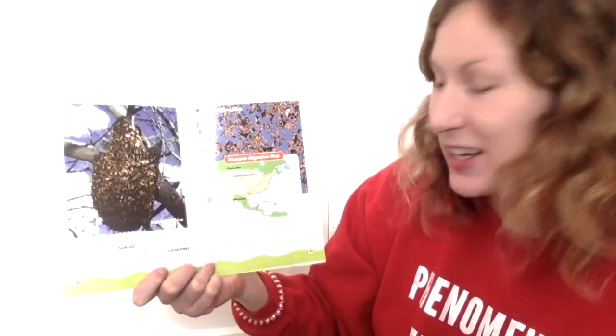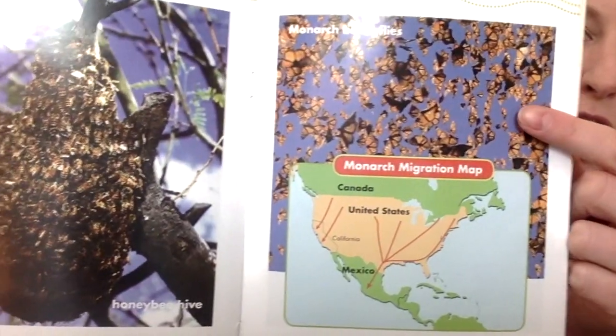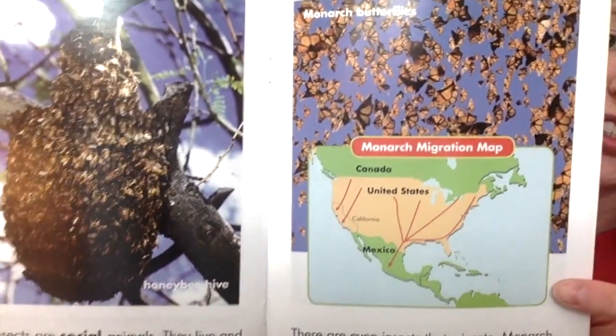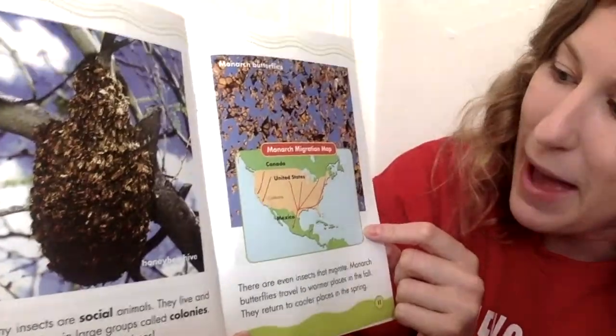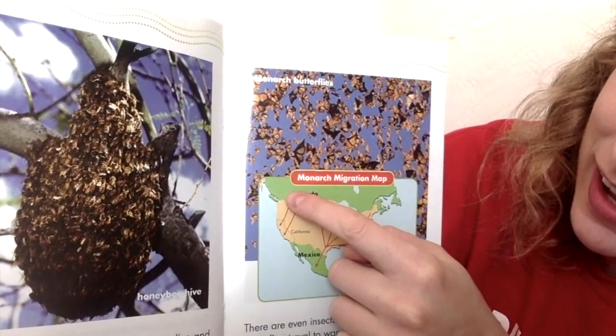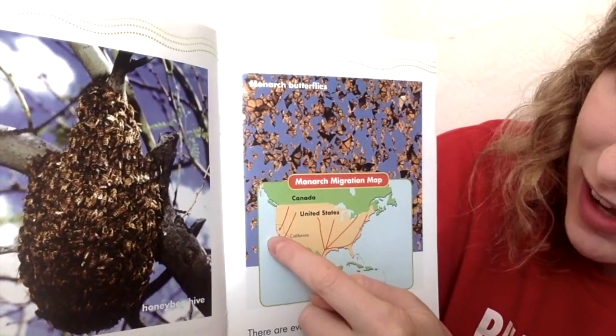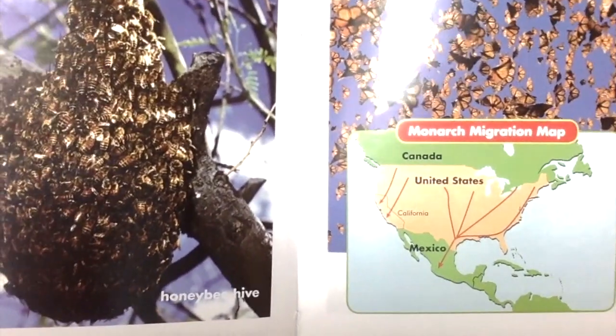There are even insects that migrate. Monarch butterflies travel to warmer places in the fall. They return to cooler places in the spring. Here's a beautiful picture of all of these monarch butterflies, and there's also a map that shows the monarch migration. It shows how the monarch butterflies travel from Canada down to California, and also from different parts of the United States down to Mexico. Those are called their migration patterns.